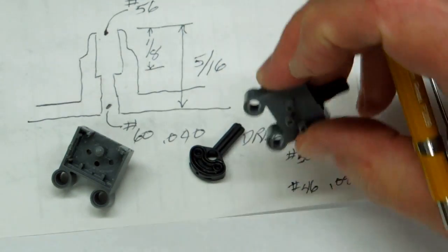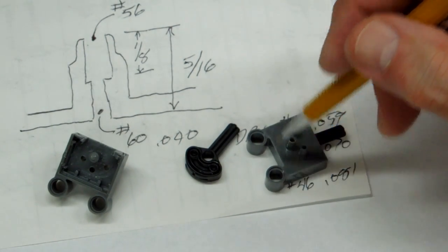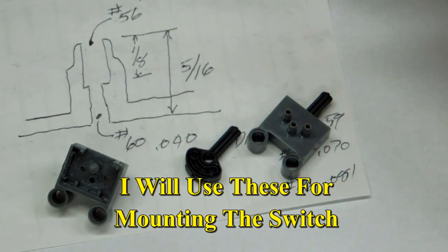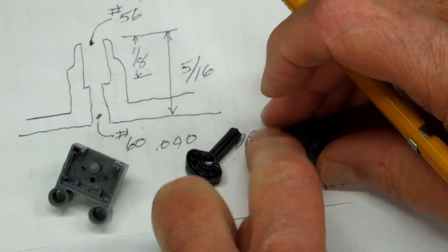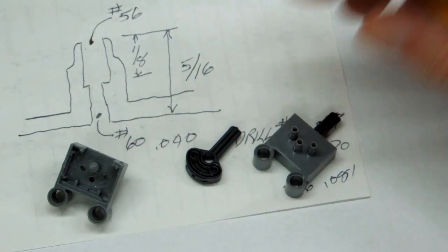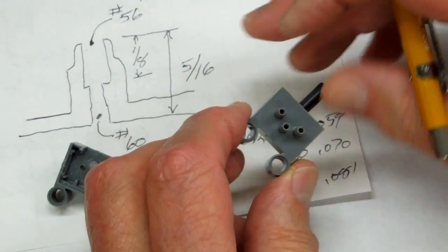Now this pneumatic switch, as it's called, has these little sections here that push over the Lego tabs. There's another switch that has these built into the back of it, I believe. I don't have one of those, but I can only assume that it's made in the same way.